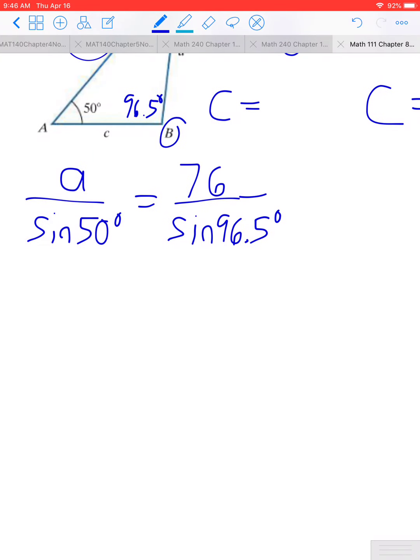To solve for A, we would multiply both sides by sine 50, and we would find that A is equal to 76 times the sine of 50 degrees, all divided by the sine of 96.5 degrees. We'll solve this to two decimal places. Go to your calculator and type it in.